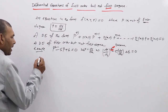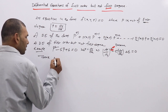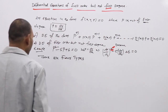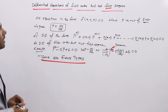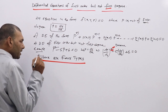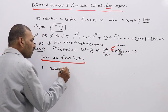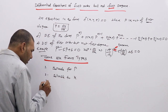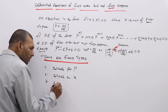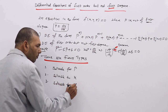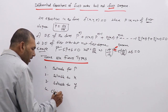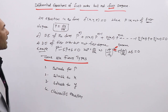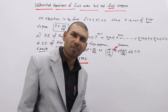There are 4 types of first order but not first degree differential equations. They are: (1) equations solvable for p, (2) equations solvable for x, (3) equations solvable for y, and (4) Clairaut's differential equation. So like this one can classify the DE of first order but not first degree into four types.